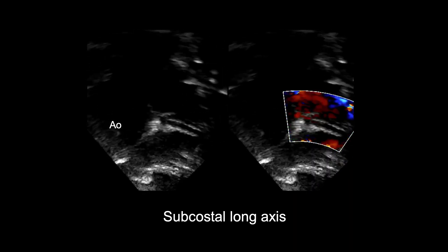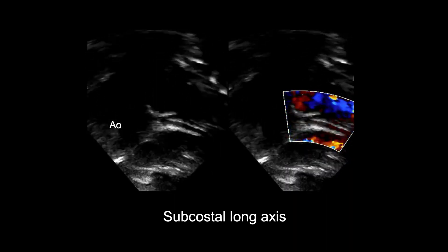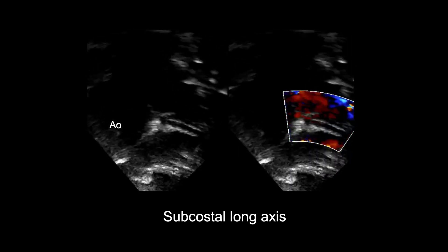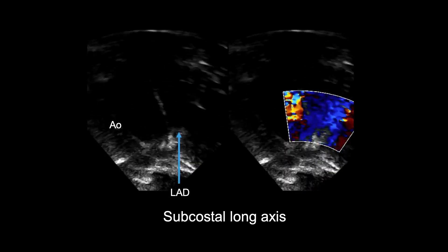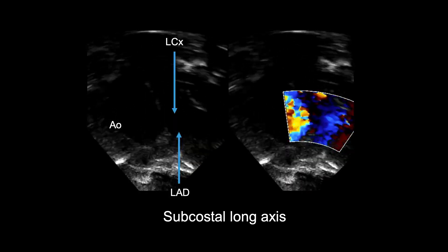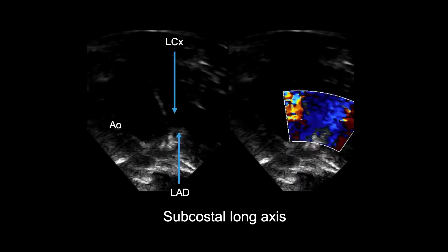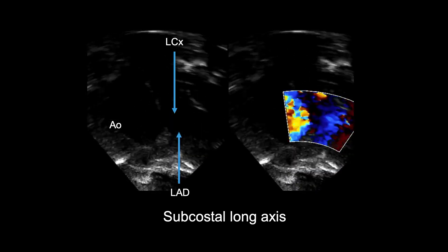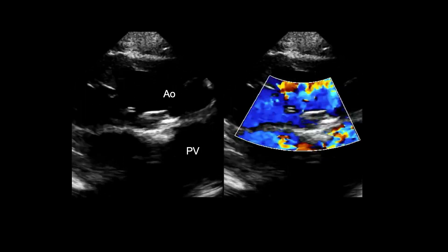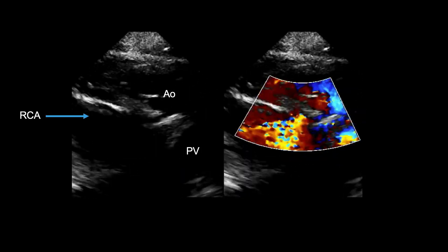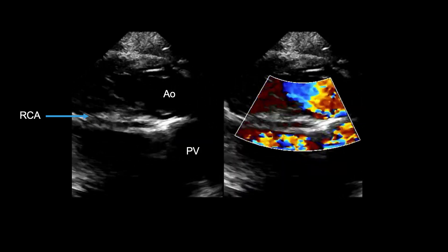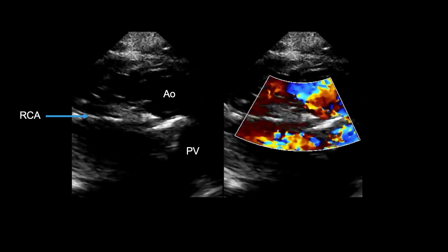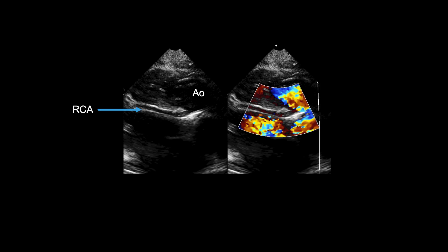This is a subcostal long axis image tilted anteriorly to the aorta and focusing on the left coronary artery. You can see its bifurcation into the left anterior descending and the left circumflex arteries. In this view, the LAD is the most anterior coronary artery. The typical position of the right coronary artery is that it arises from the rightward and posterior coronary cusp. Again, acquire a moving image first followed by a still image of the right coronary artery to capture forward flow within the vessel.